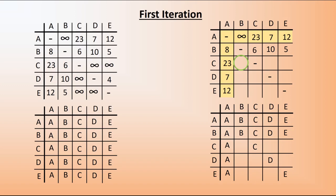On the next cell, we're comparing an infinite distance with 23 plus 7. Obviously 23 plus 7, making 30, is smaller, so that value goes into the cell. We do not copy the infinite across. Because we made a change, we do not copy the original D; instead, we take the vertex from the shaded cells — we put an A in that place. We're changing the route as we go: we've found a quicker way of getting from C to D by going via A.